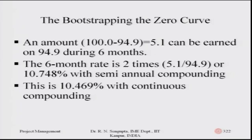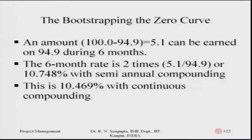This is being semi-annual compounding, so you have to find out the continuous compounding rate using the formula discussed in the last class. Based on the semi-annual compounding rate of 10.748%, we find that the continuous compounding rate is 10.469%.